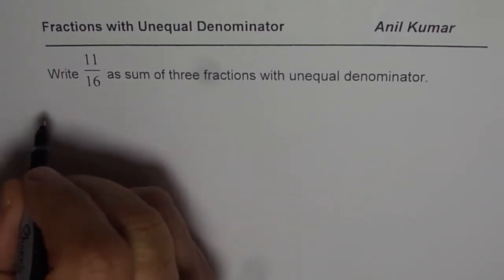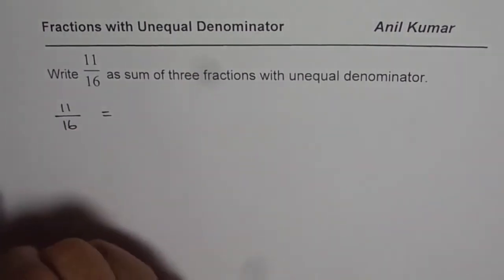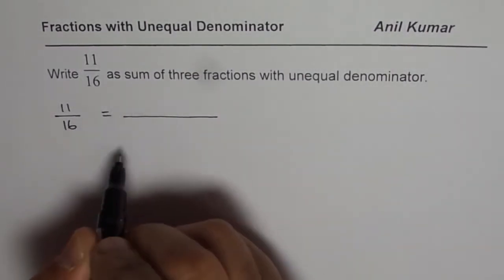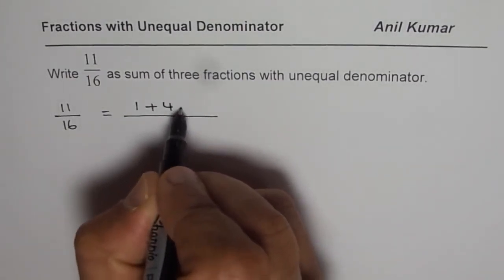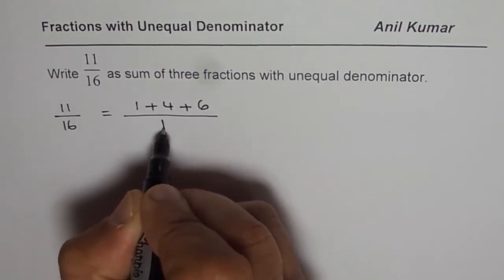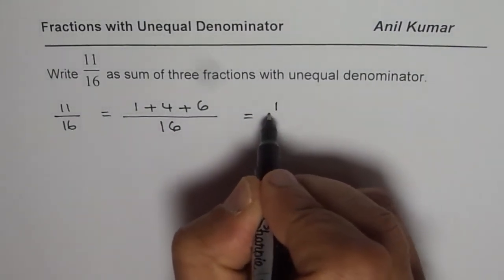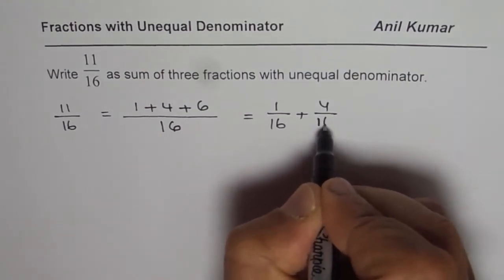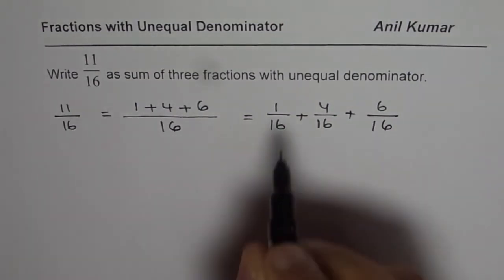So let's begin by writing 11 over 16. How can you write 11? 11 could be given as combination of three numbers. Think about 1 plus 4 is 5 and 5 plus 6 is 11. So we get 11 in the top and 16 denominator. You could write this as 1 over 16 plus 4 over 16 plus 6 over 16. Now these could be simplified and their equivalent fractions could be 1 over 16 plus.